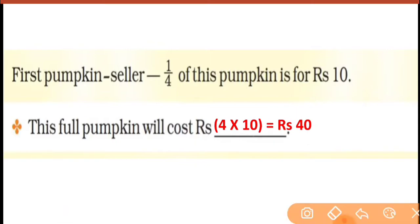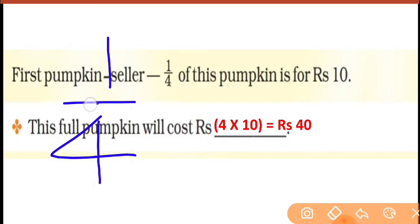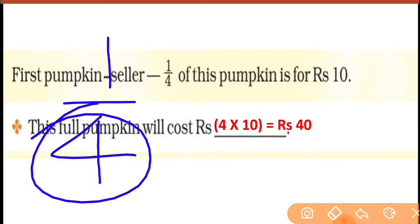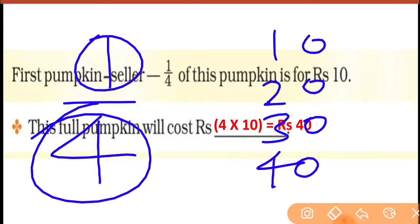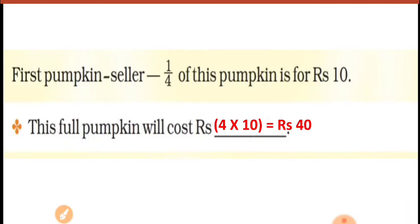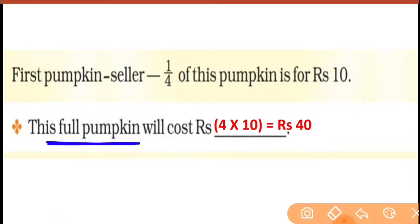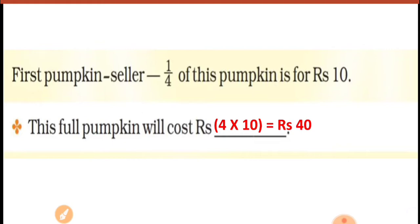Tho aapko four se multiply karna hai. One upon four ka means total kitnay parts hain? Four parts hain. Tho one part ka mil raha hai ten rupees ka. Tho two parts kitnay ka milengi? Twenty rupees ke. Three parts kitnay ka? Thirty rupees ke. Four parts kitnay ka? Forty rupees ke. Aur jab four parts milake kitnay ho jaenge? Whole — full pumpkin! Full pumpkin ka matlab total four parts — that is rupees forty. This is your answer.